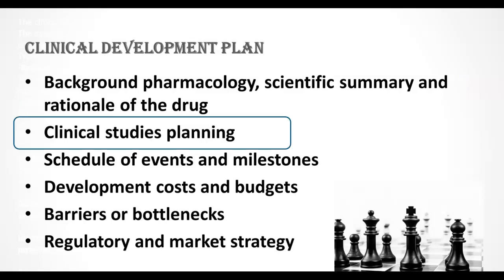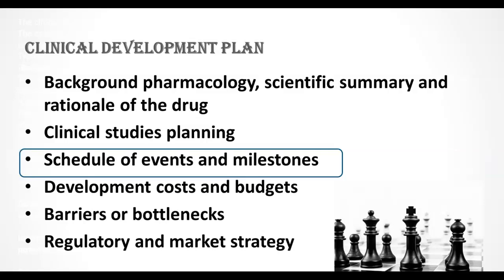The clinical studies planning section is the core and most important section of a clinical development plan. It provides a general outline for how many trials should be conducted, at what phases, and details of each clinical trial planned for the drug from phase 1 to phase 3, and phase 3b and 4. The schedule of deadlines, milestones, and decision-making section provides the conditions for go or no-go decisions.